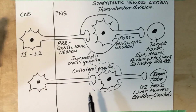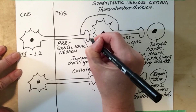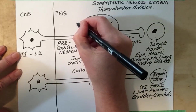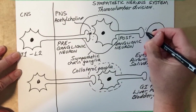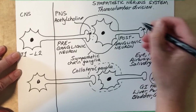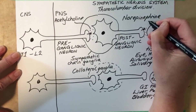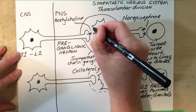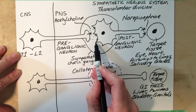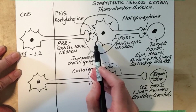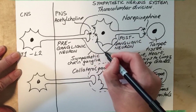The neurotransmitters involved in these two pathways are exactly the same. The neurotransmitter released from the preganglionic neuron is termed acetylcholine. And the neurotransmitter released from the postganglionic neuron is termed norepinephrine. The receptors for acetylcholine are located on the cell body and dendrites of the postganglionic neuron, and these are called nicotinic cholinergic receptors.